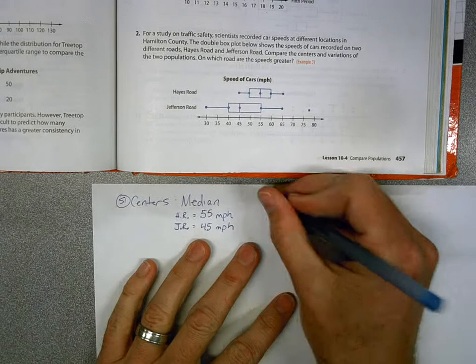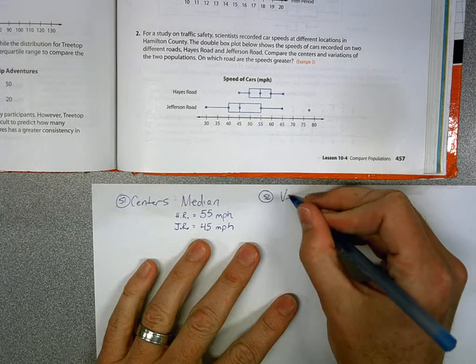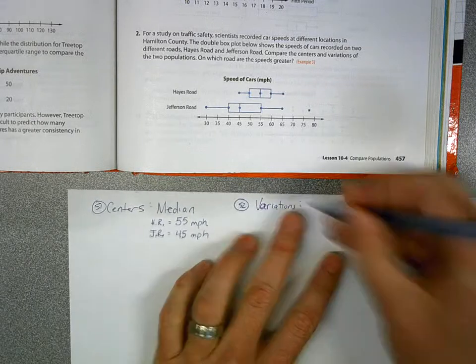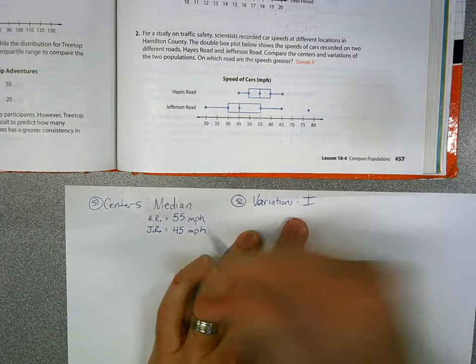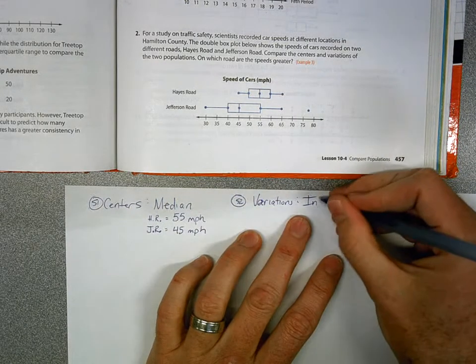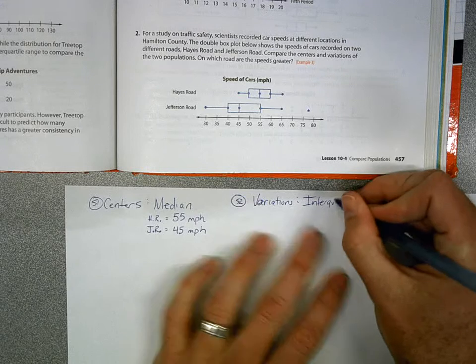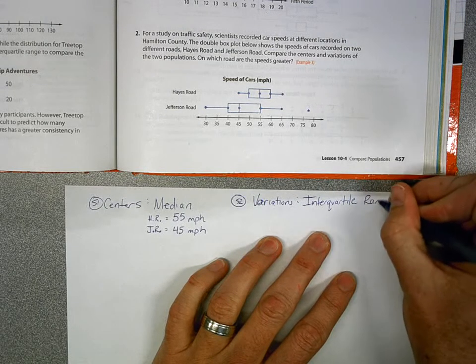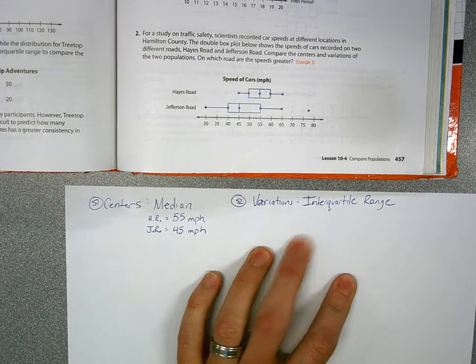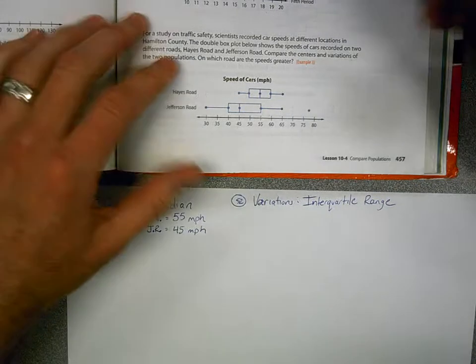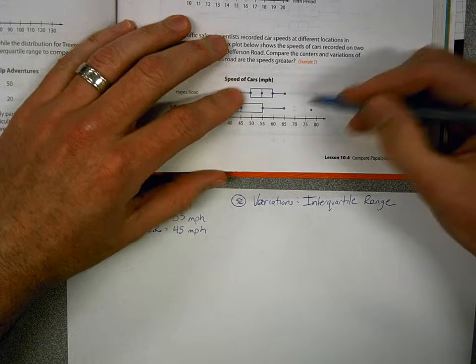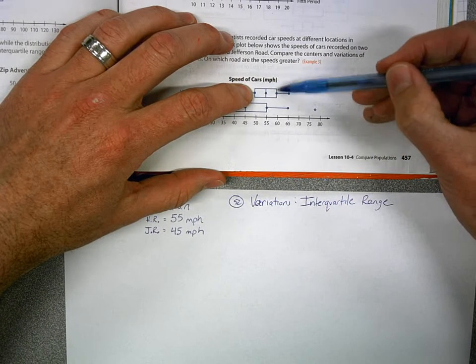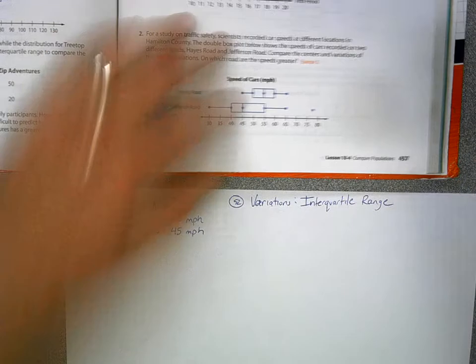With step two, remember it's measures of variation. And remember, with this, and we're dealing with median and box and whisker, it is the interquartile range. So if I'm looking here, if you remember right, the interquartile range is the distance between the first quartile and the third quartile.